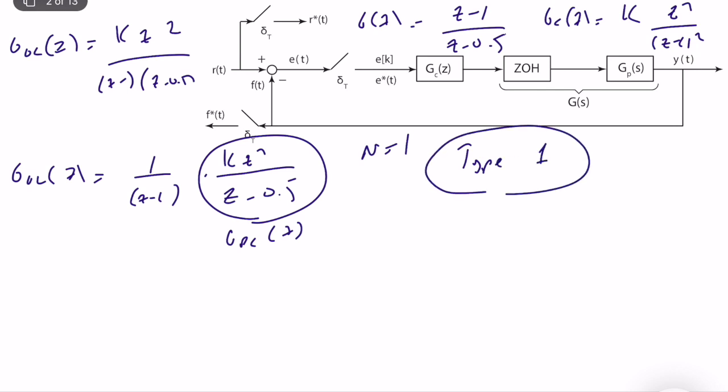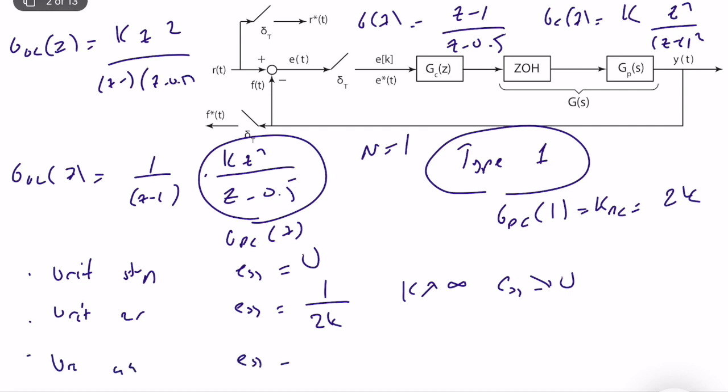This simplifies our calculations. For unit step, since it's a type 1 system, the error steady state is equal to 0. For unit ramp, the error steady state is constant, and it's equal to 1 over g_dc. The DC gain of the system k_dc is equal to 2k. So it's 1 over 2k. As k increases, error steady state decreases. For unit acceleration input, we know that error steady state is infinite.